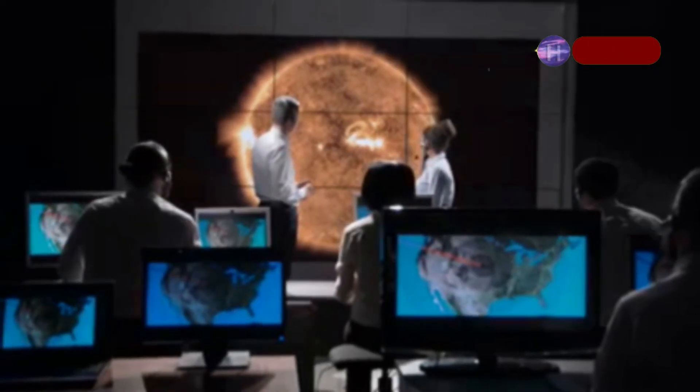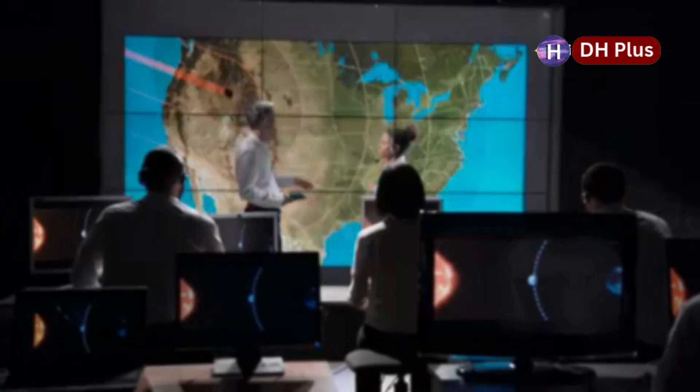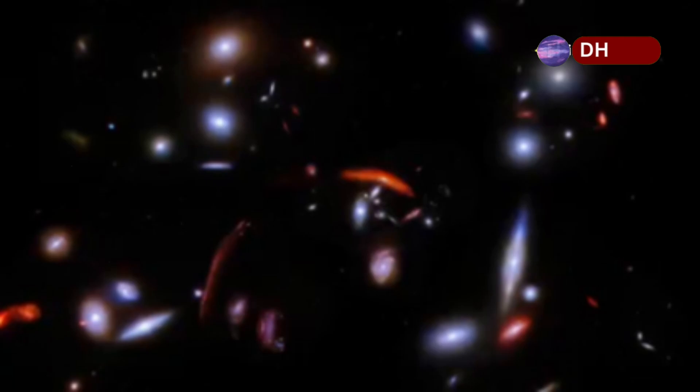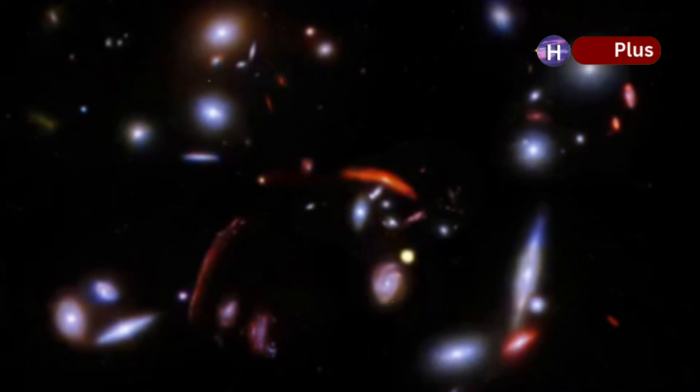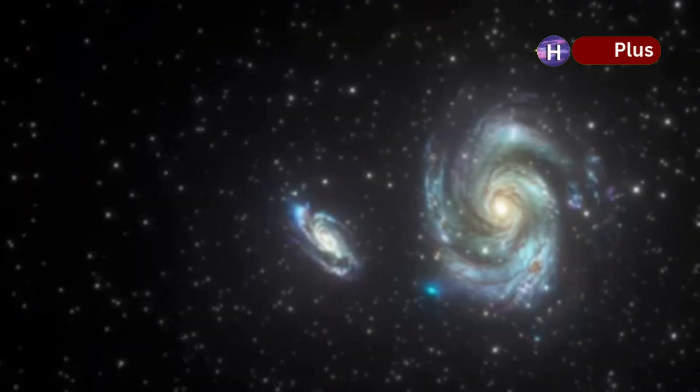But how did scientists even find something that doesn't want to be found? They looked deeper. Using Webb's powerful infrared vision and spectroscopy tools, researchers focused on its host galaxy. A relatively small one. There, they noticed subtle spectral patterns like faint fingerprints left behind at a cosmic crime scene.